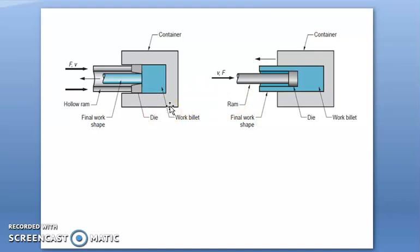In indirect extrusion, the billet remains stationary while the die is pushed into the billet by hollow ram through which extrusion takes place. The billet and container do not experience any displacement, and hence there is no frictional forces between the work and the container.